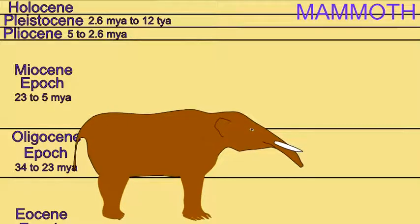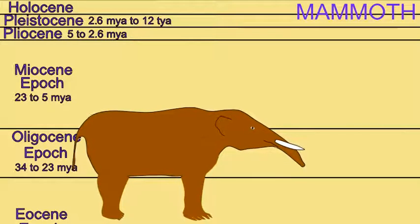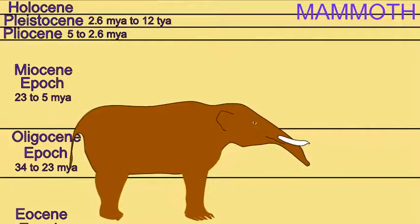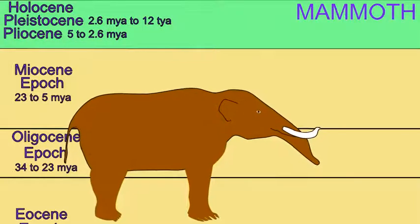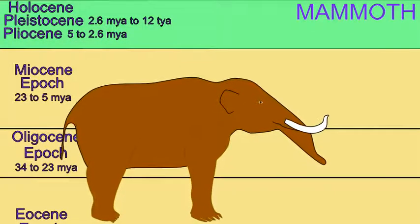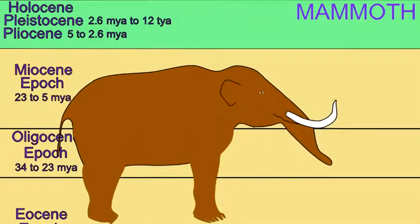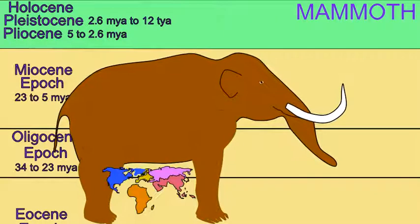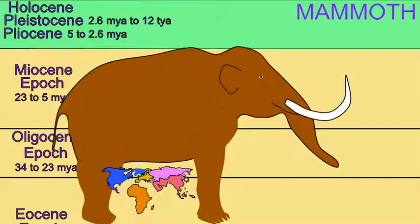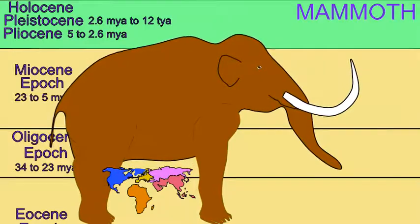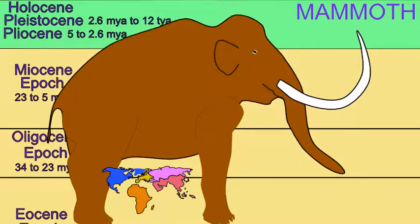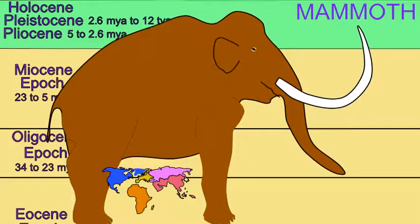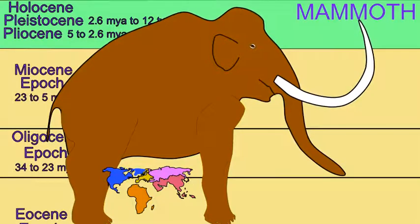Six million years ago in Africa, the first members of the family Elephantidae evolved, which would spread throughout the world and be the ancestors of African elephants, Indian elephants, and several species of mammoth. The elephants in this group had modified their teeth to allow for horizontal shearing, which allowed them to graze on grasses efficiently.